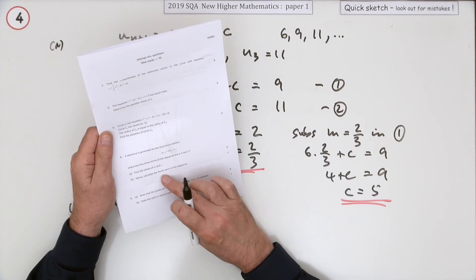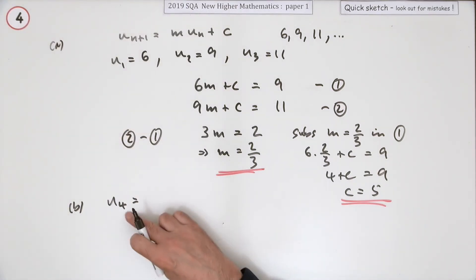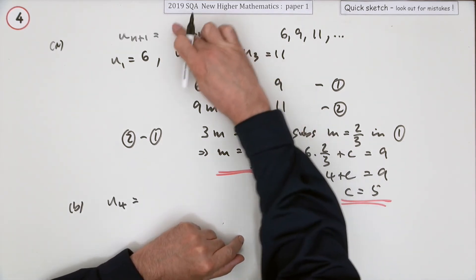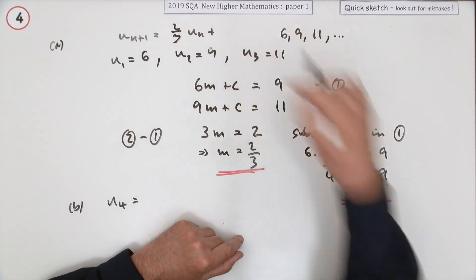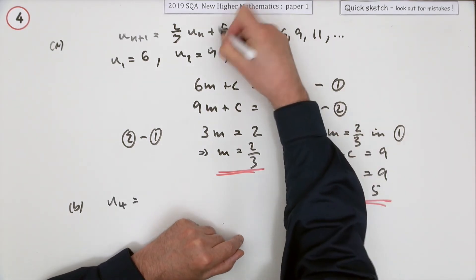Part B: Hence calculate the fourth term, just for a mark. So what's the fourth term? Well, now we know the recurrence relation. The recurrence relation is M equals 2/3, and C equals 5.